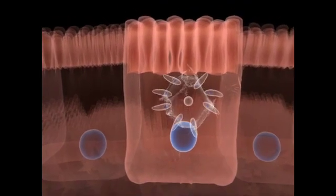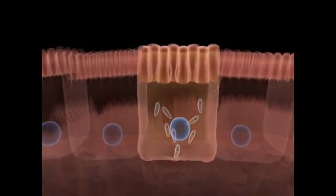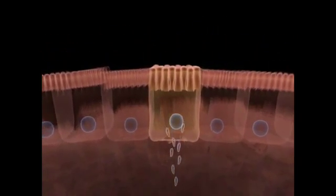From the intestine, the tachyzoites will spread to other cells and tissues, establishing the acute form of toxoplasmosis.